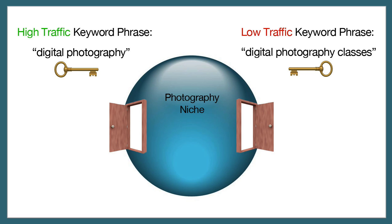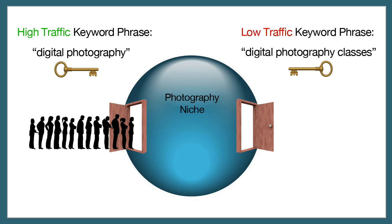In every niche, there are many different keyword phrases, and every phrase has a value based on how many people use it to access the niche. Some keywords generate high levels of traffic while others generate low levels. For example, in the photography niche, more people explore the niche using the keyword 'digital photography' than 'digital photography classes.'